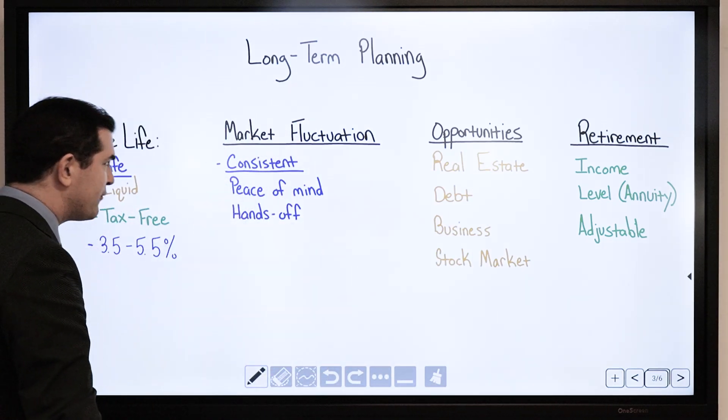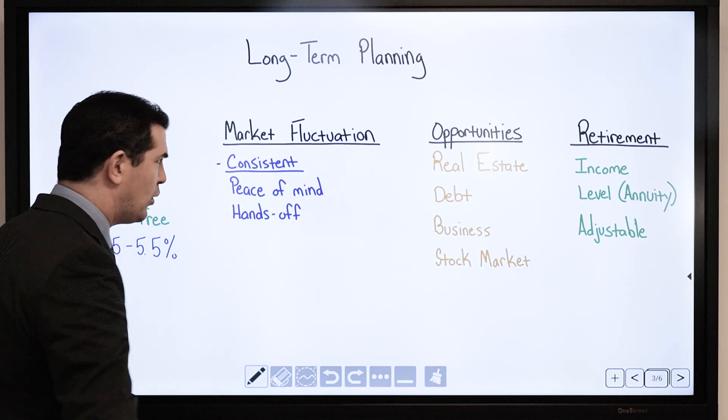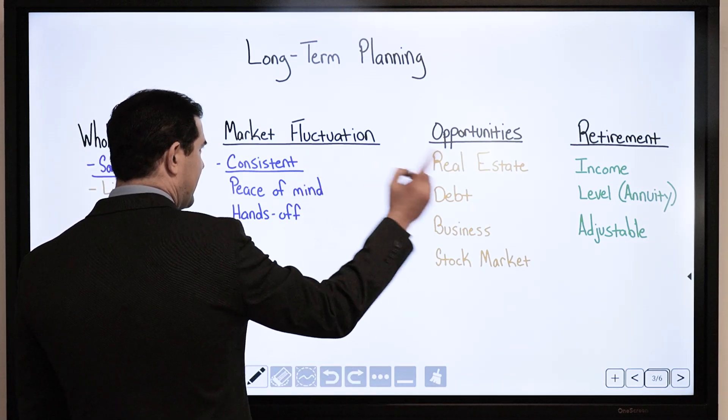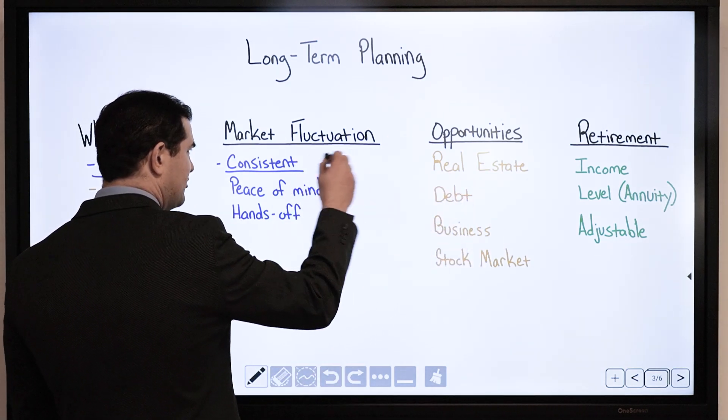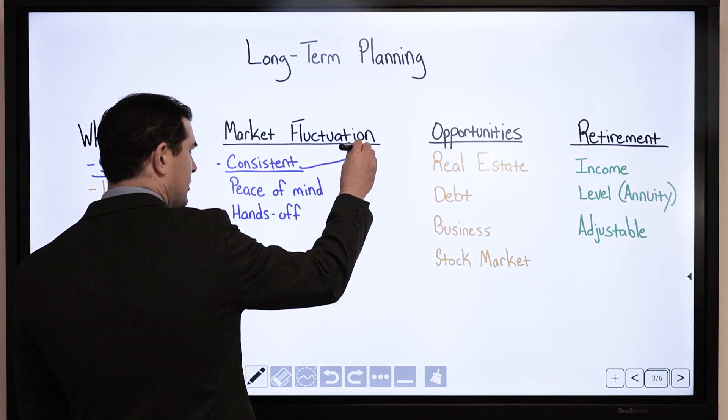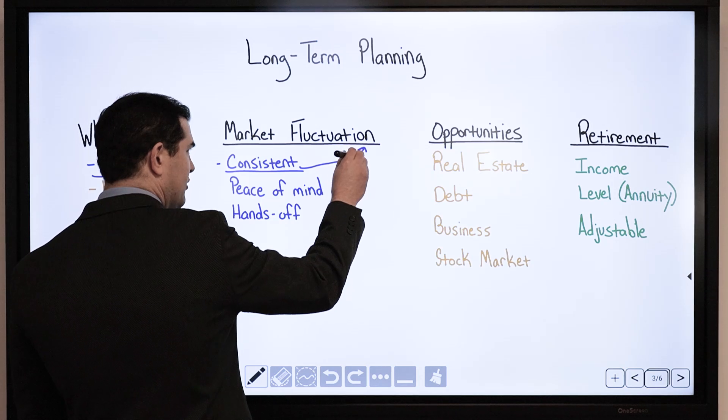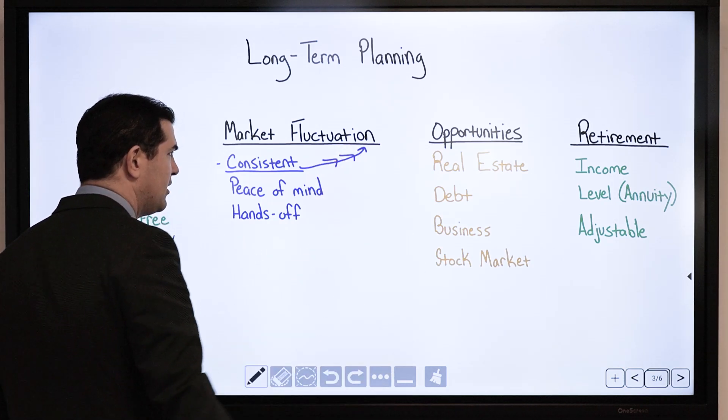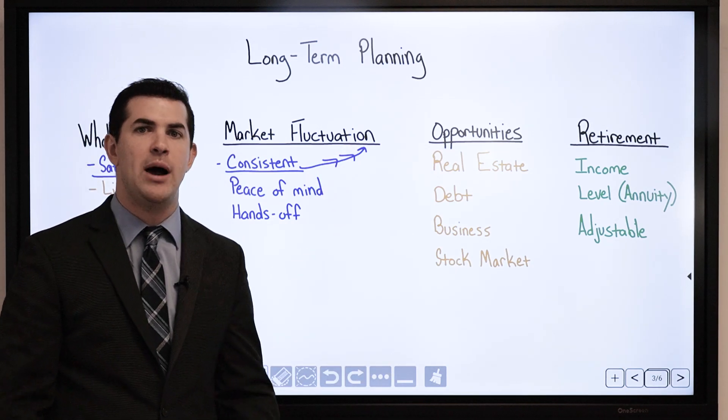It is consistent. Meaning every single year, no matter what happens, I have the guaranteed rate and dividends as well. Dividends are not guaranteed, but have always been paid, at least for the past 150 years with a lot of these top companies. I see it constantly go up.